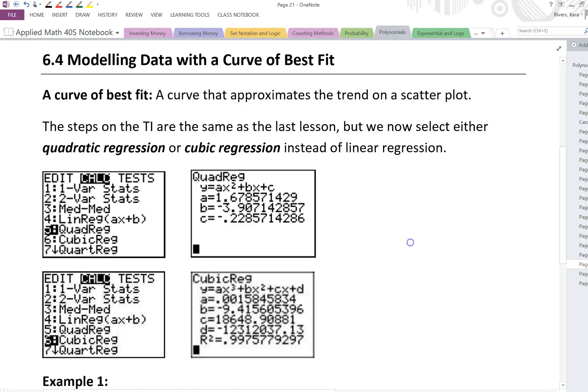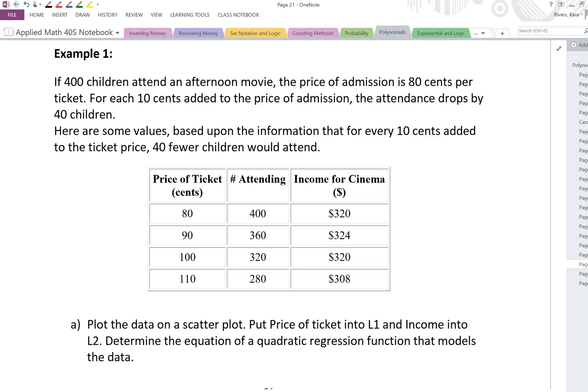Let's take a look at example one. If 400 children attend an afternoon movie, the price of admission is 80 cents per ticket. For each 10 cents added to the price of admission, the attendance drops by 40 children. Here are some values based upon the information that for every 10 cents added to the ticket price, 40 fewer children would attend. So we can see our data table. Price of tickets is 80 cents, 90 cents, 100 cents, so that would be like $1 and $1.10. That's how much it costs per ticket. Number of people attending, which determines what you're charging there, and then the income for the cinema.